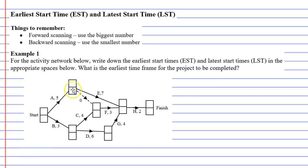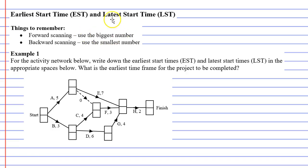I don't actually like to have the two squares next to the vertex. I prefer to have the two squares in place of the vertex, with the square at top as the earliest start time and the square at the bottom as the latest start time. So I'm going to use this diagram to complete example 1. We're going to start by filling in our earliest start times using a method called forward scanning — use the biggest number, as we'll discuss.